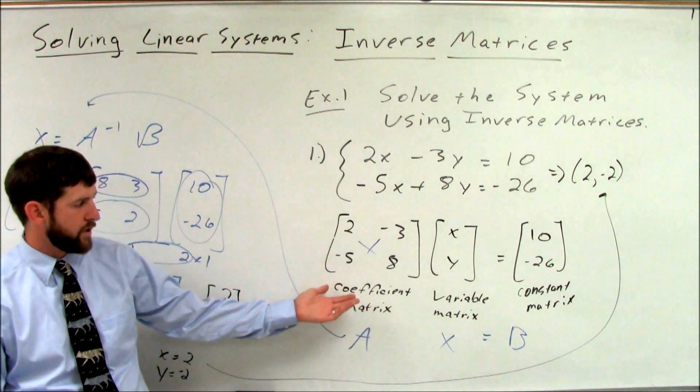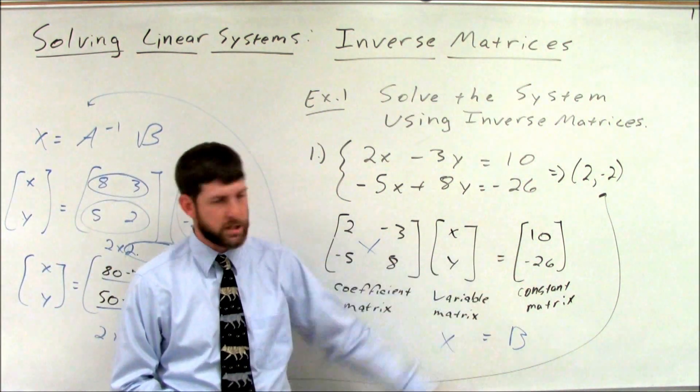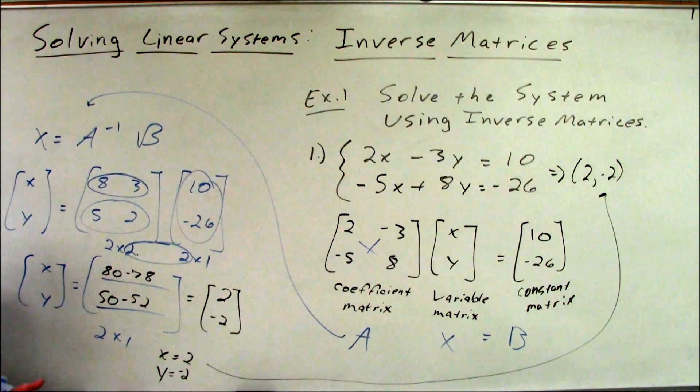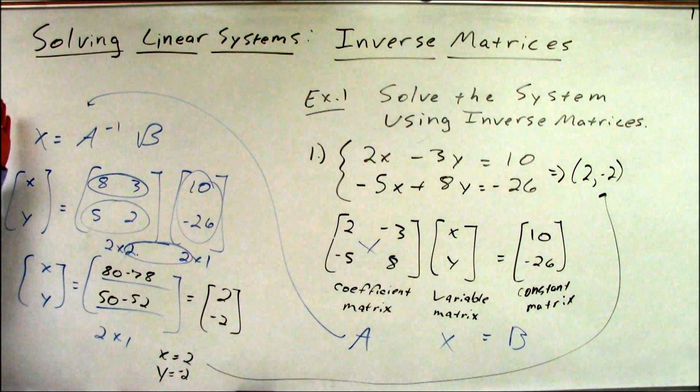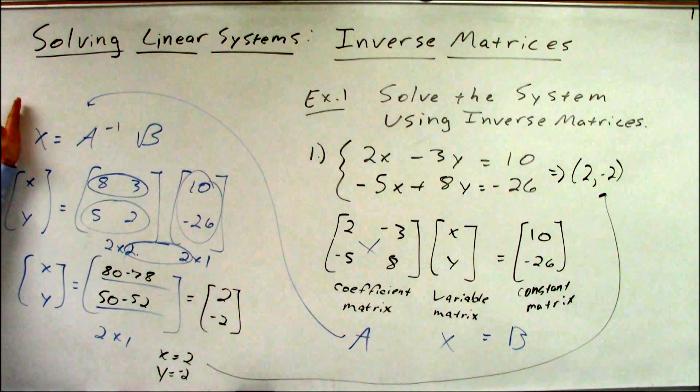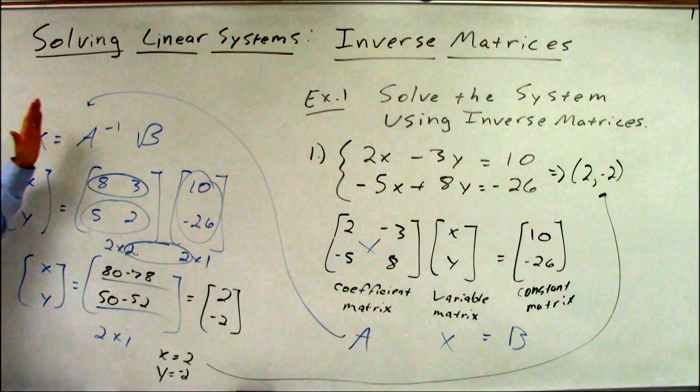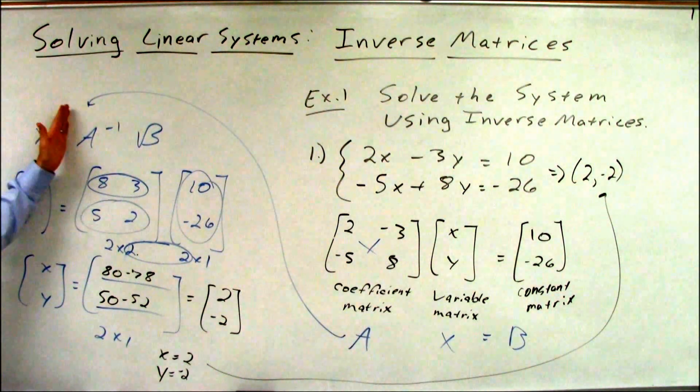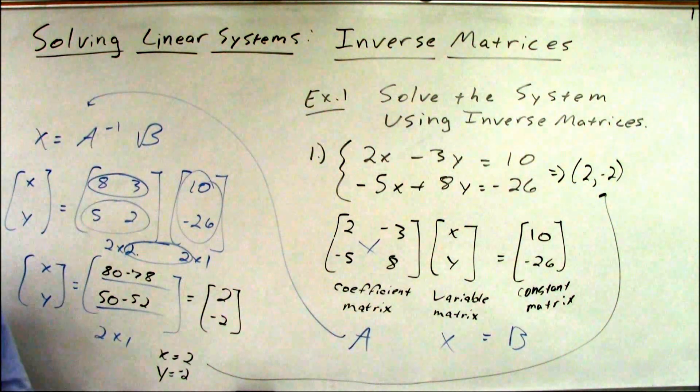Rewrite it as a coefficient matrix times a variable matrix equals a constant matrix. And then just using some simple equation solving techniques, we realize that the variable matrix should be equal to the inverse of the coefficient matrix times the constant matrix.